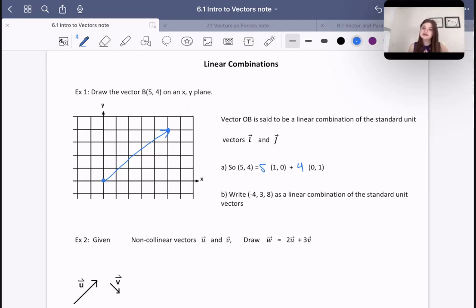Now they're asking us, can we write negative 4, 3, 8 as a linear combination of the standard vector units? And yes, we can. We can argue that negative 4, 3, 8 is equal to negative 4 times (1, 0, 0), plus 3 times (0, 1, 0), plus 8 times (0, 0, 1), right? So we can express any vector in this manner.